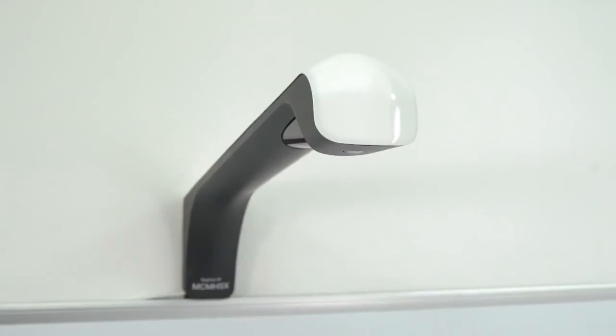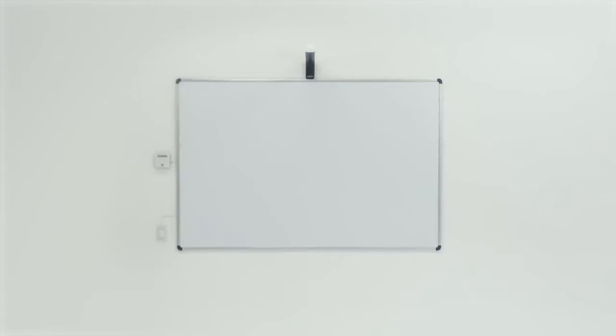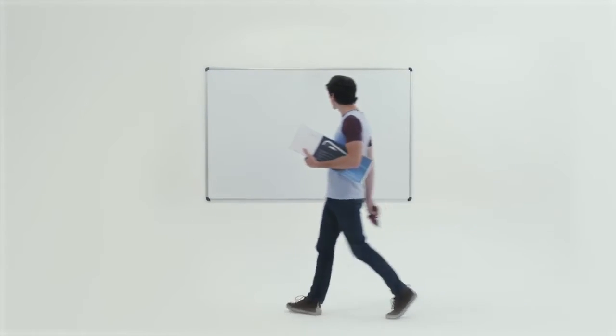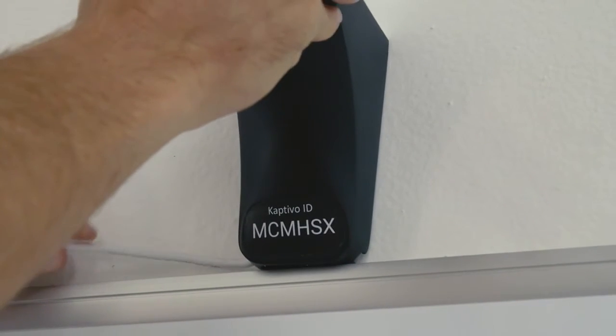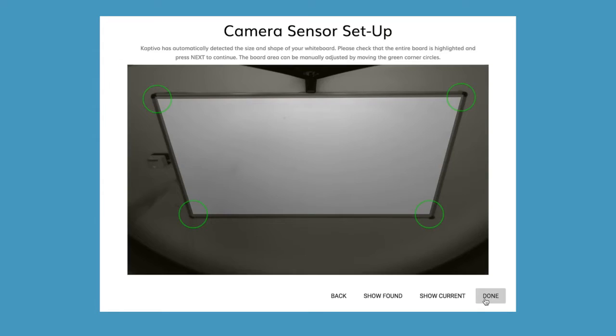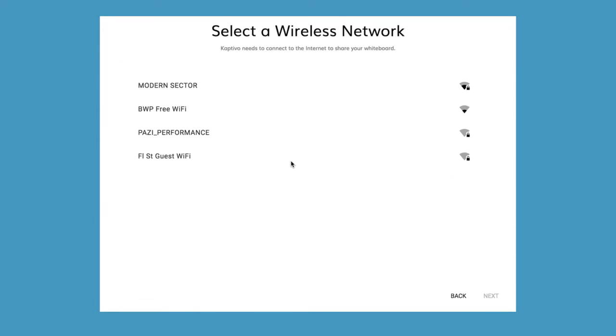Captivo is a new accessory that transforms any regular whiteboard into an online collaboration system. Installing Captivo with your existing whiteboard is quick and easy. Just mount the camera and control pad, plug in for power, and use the web-based software to configure and connect to your Wi-Fi network.